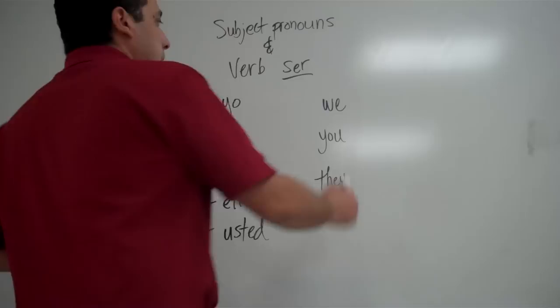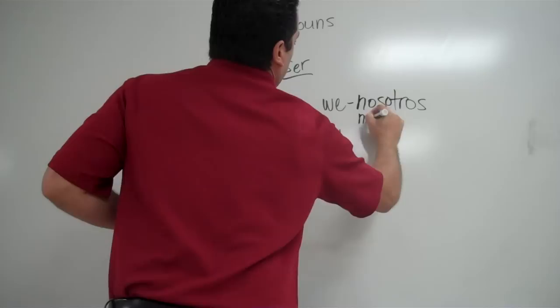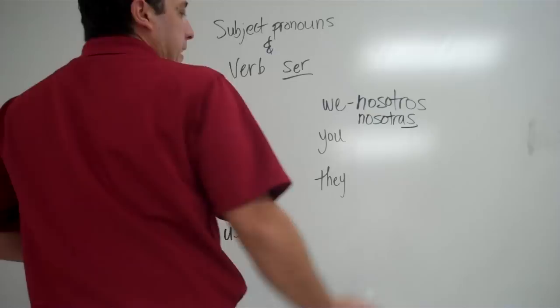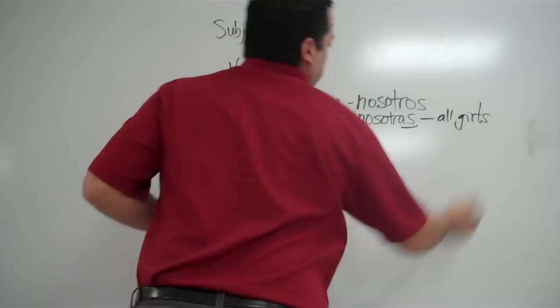Usted. So, we have yo, tú, él, ella, usted. So, we jump over here to the plural form. So, now we're talking about we. We. And that's going to be one of two forms. Nosotros or nosotras. Okay. And you're going to use nosotras with the as ending if you are talking about all girls. If you're a girl and you're talking about all girls.